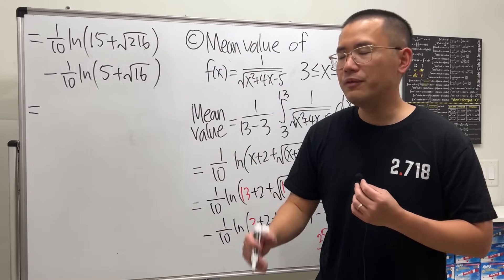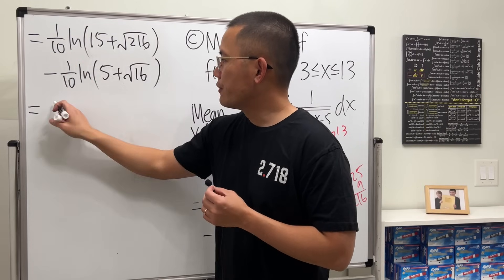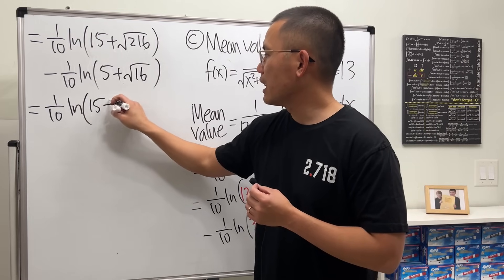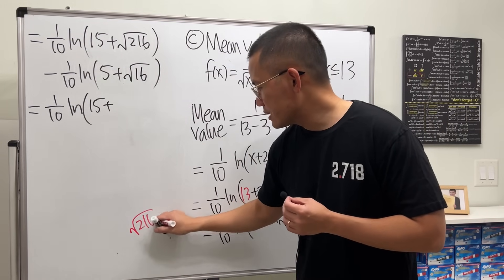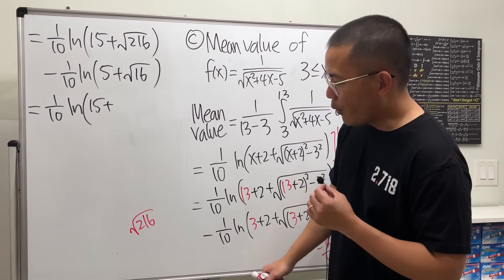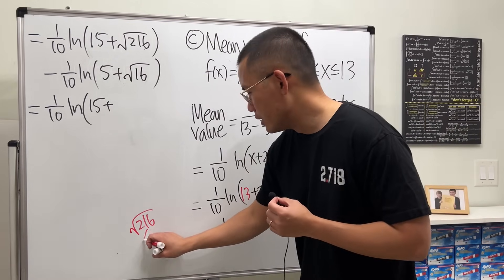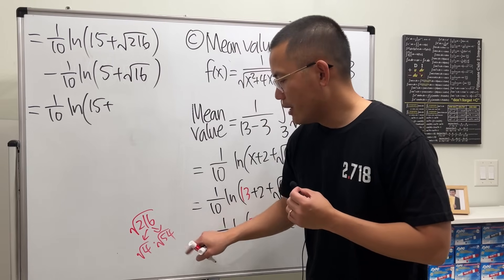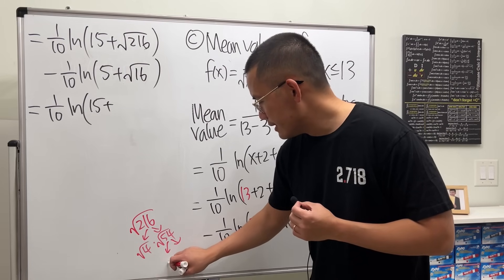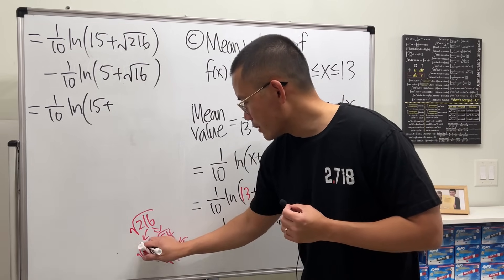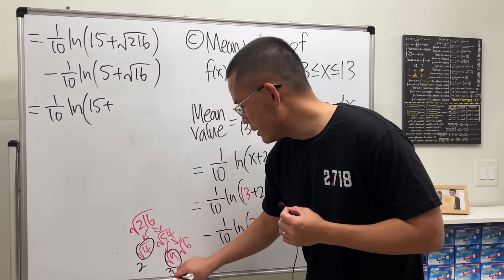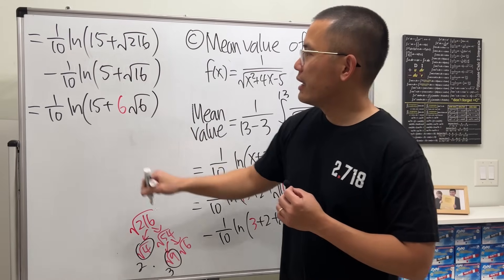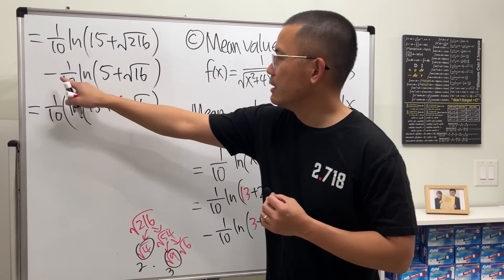I'll factor out the 1/10 and then have ln(15 + √216). Since 216 = 4 × 54 = 4 × 9 × 6, we can simplify: √216 = √4 × √9 × √6 = 2 × 3 × √6 = 6√6. So that term becomes 15 + 6√6.